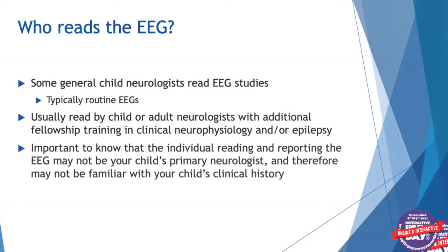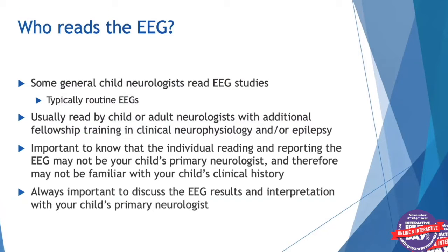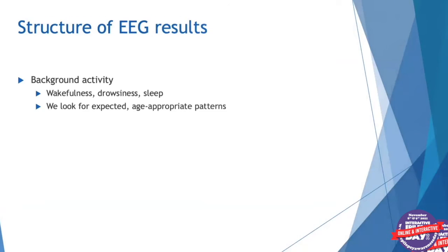It's important to know that the individual reading and reporting on the EEG may not be your child's primary neurologist and therefore may not be familiar with the child's clinical history. It's always important to discuss the EEG results and interpretation with your child's primary neurologist, since they know your child best. When you see a report, we comment on the background activity, looking for different states — wakefulness, drowsiness, and sleep — and look for expected age-appropriate patterns.